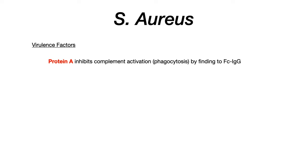Protein A binds to the Fc constant portion of an immunoglobulin G, and when it does that it basically prevents complement activation, so you can never get to the phagocytosis stage of complement. The body has no ability to phagocytize Staph aureus because protein A, anchored to the constant portion of immunoglobulin, prevents complement activation, phagocytosis, and clearance of Staph aureus.